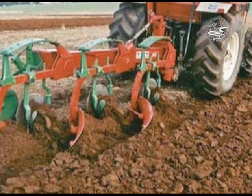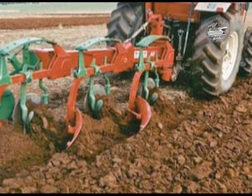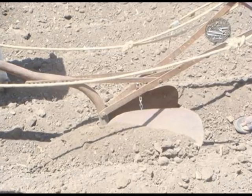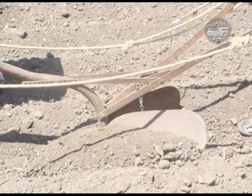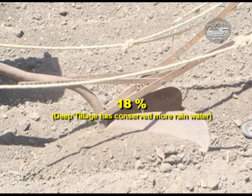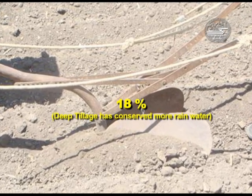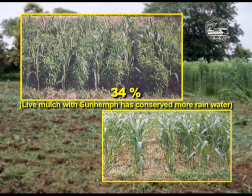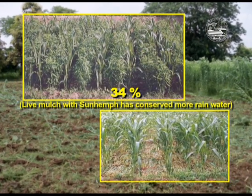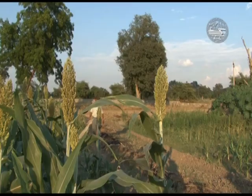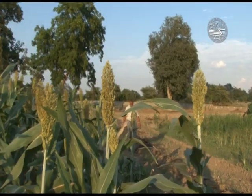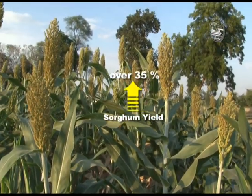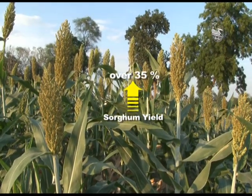Deep tillage by mouldboard plough once in 3 years has conserved 18% more rainwater and with live mulching of sunhemp, it has been enhanced to 34% and increased the sorghum yield by more than 35% over the traditional practice.